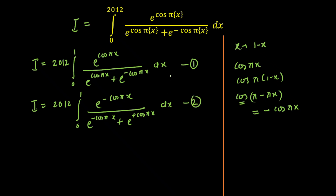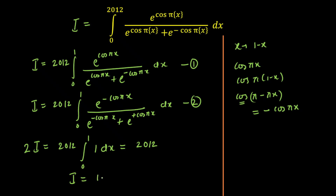Whenever we apply King's property, we add the two equations. The moment you add the first and second equations, you get 2I equals 2012 times integration from 0 to 1. The denominator is exactly the same for both equations, so in the numerator we get e raised to power cos(πx) plus e raised to power minus cos(πx) — that is A plus B upon A plus B, which equals 1. So 2I equals 2012 times the difference of limits, which is 1. Therefore 2I equals 2012, and I equals 1006. That is our final answer.